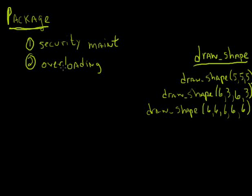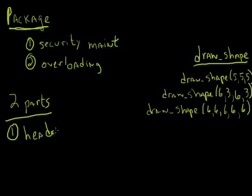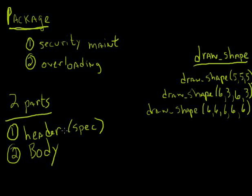We don't have to use a package to do overloading, but packages make it a heck of a lot easier. There are two main pieces of a package: the header and the body. The header — sometimes also referred to as the spec — has all my definitions for all my procedures and functions inside my package. The body has the actual code that's going to be executed. Separating things this way also makes it a lot easier to define and overload functions.